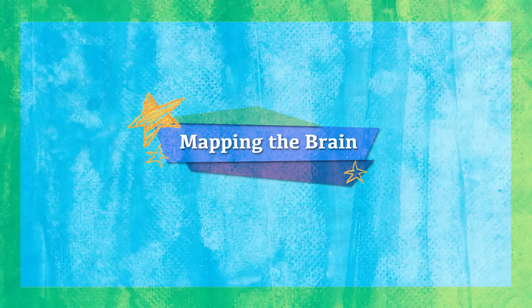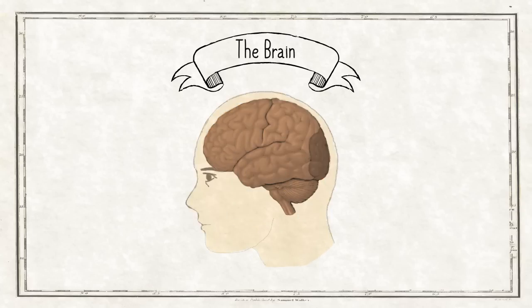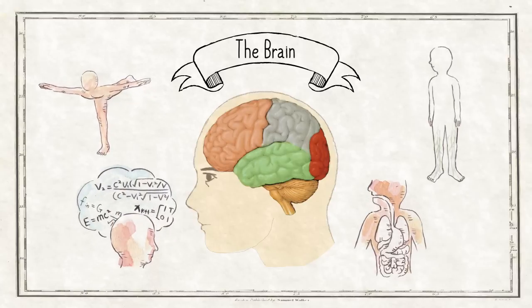Mapping the Brain. The brain is a very complex organ, and different parts of the brain do different things.